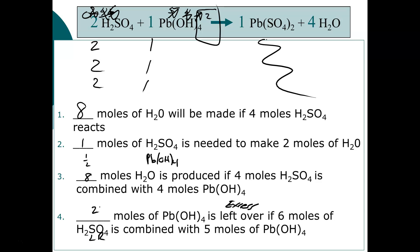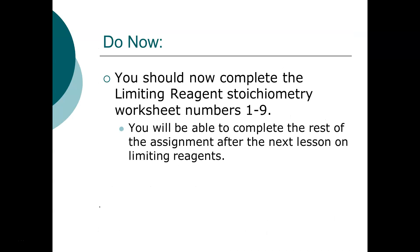Alright, that is how you do the first part of limiting reagents. It gets a little more difficult from here, but hopefully you have the conceptual understanding down — that's the important part for today. Think of it as a recipe: your ingredients are used to make something, and whatever you do to one side — double it, triple it, cut it in half — you do to the other. For your limiting reagent homework, numbers one through nine you should be able to do now. We can talk about them in class if you're stuck, and after the next lesson you'll be able to work on the rest.